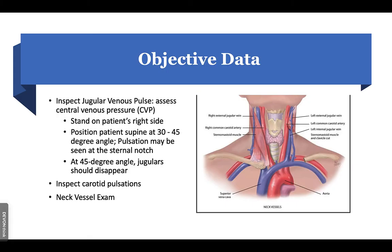Now for objective data: inspect the jugular venous pulse and assess central venous pressure (CVP), which is synonymous with right-sided heart pressures. Stand on the patient's right side with the patient in supine position at 30 to 45 degrees. Pulsation will be low, seen at the sternal notch. Change position and move the head of bed up to about 45 degrees — the jugular should start to disappear. When inspecting carotid pulsations, always palpate only one carotid at a time.